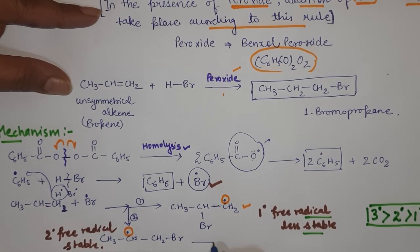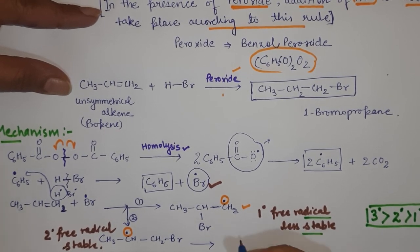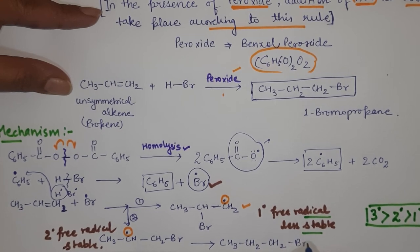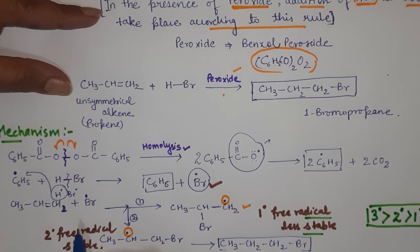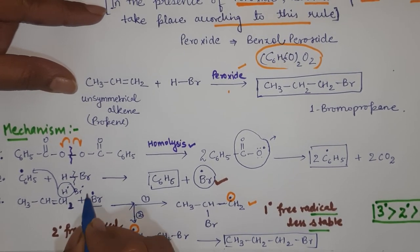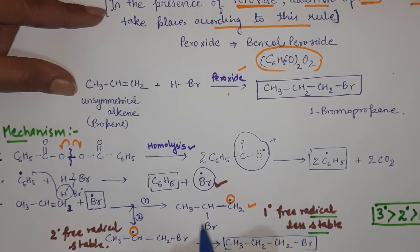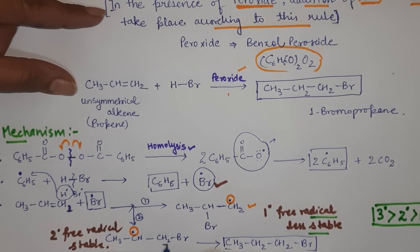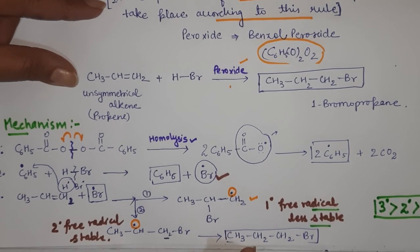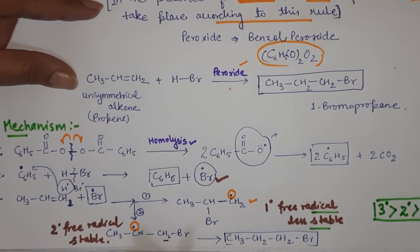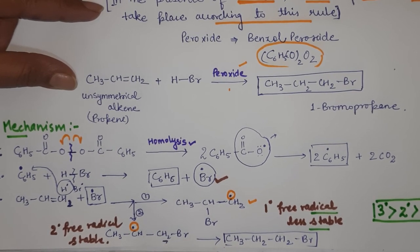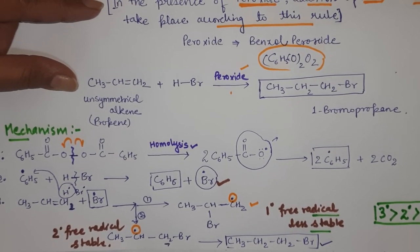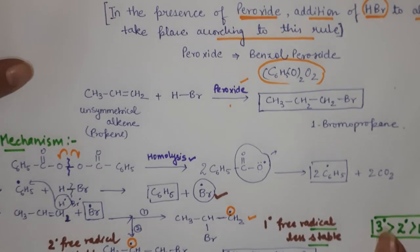The product is CH3-CH2-CH2-Br. So you can see here that the negative part, means the Br, is going to that carbon which is having more number of hydrogens. But in the case of Markovnikov, the negative part goes to that carbon which is having lesser number of hydrogen. That's why the product which is formed here is different from, or you can say opposite to that of Markovnikov's Rule. That's why we call this rule as Anti-Markovnikov's Rule.